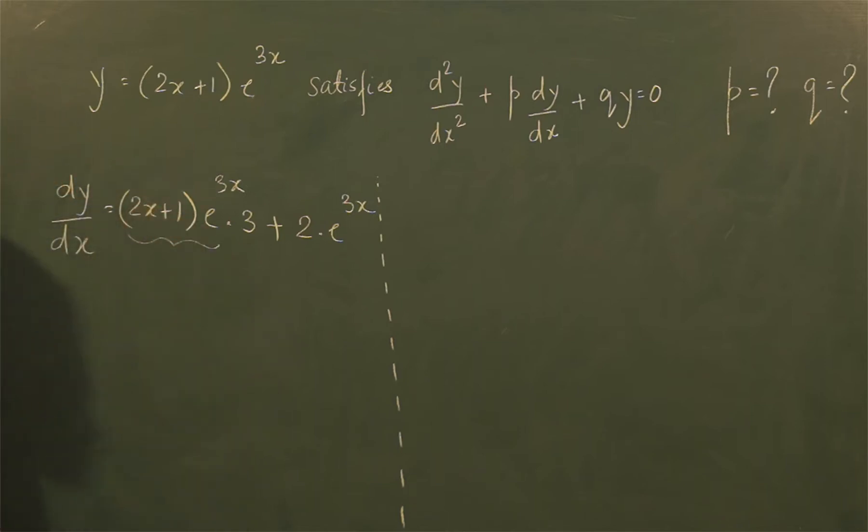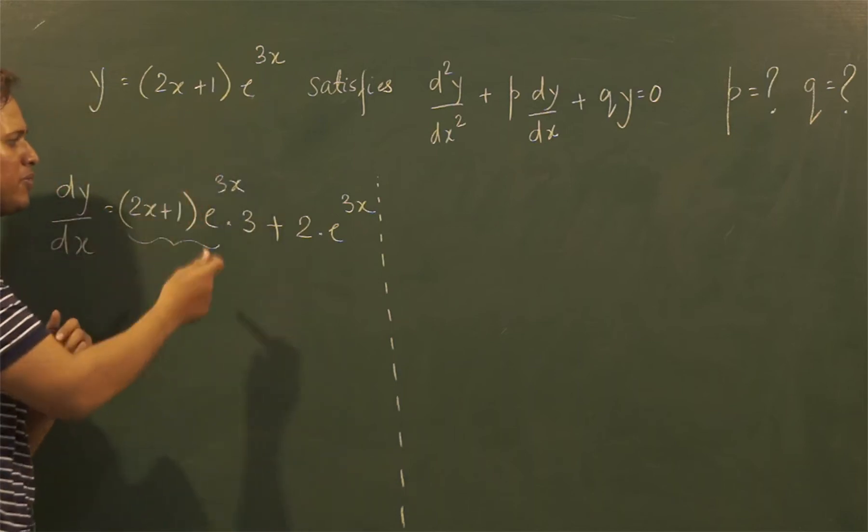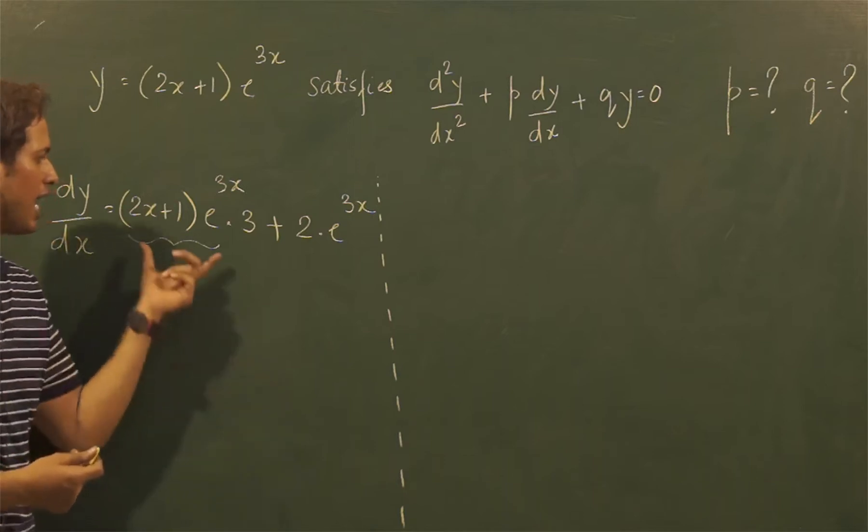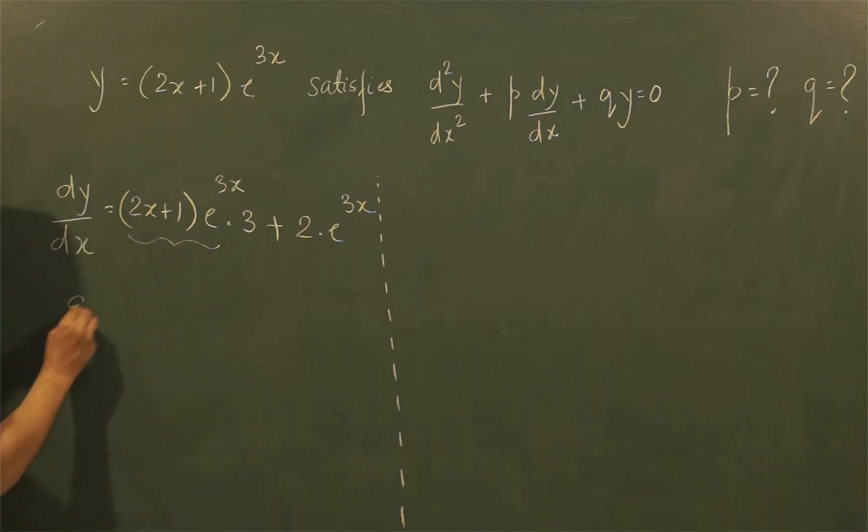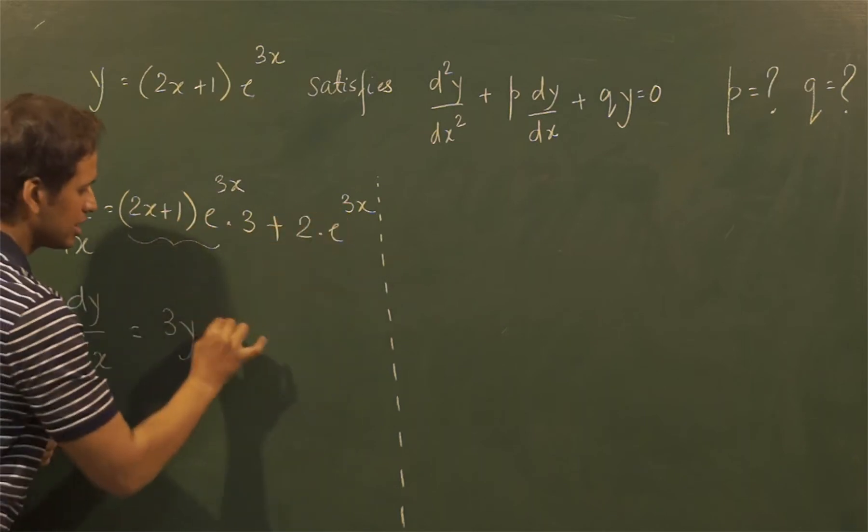If you see this particular expression, what does it resemble? It resembles y. So before finding the derivative of dy/dx again, that means before finding d²y/dx², I will make the replacement of this term with y. So I will do dy/dx equal to 3 times y, and of course this term you can copy down as such.